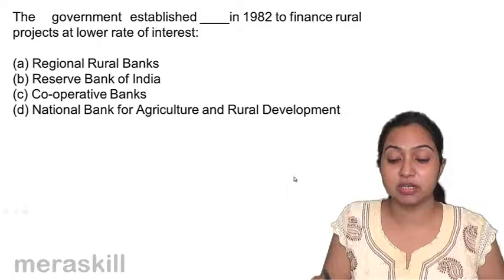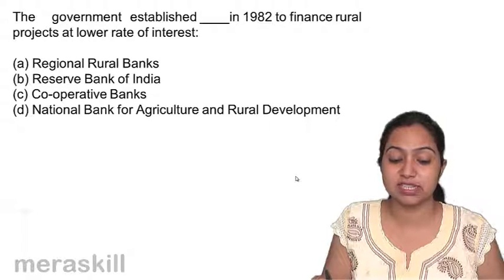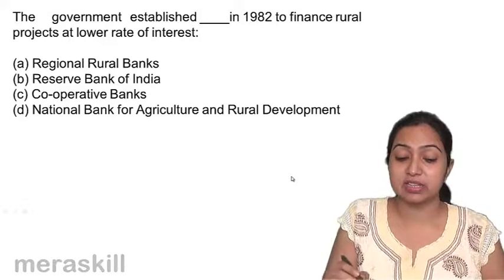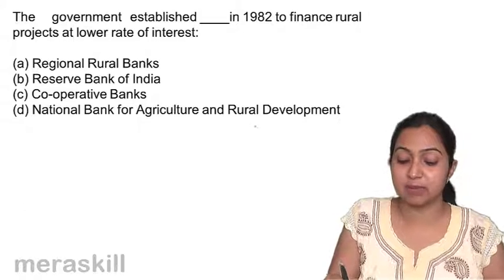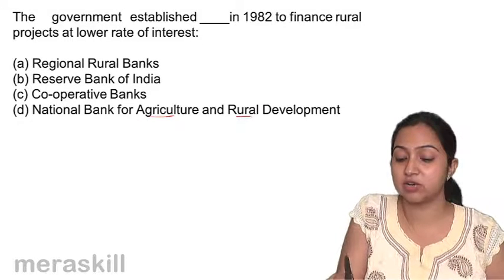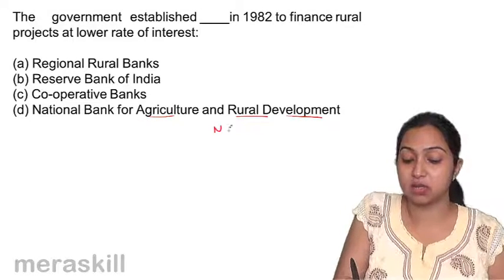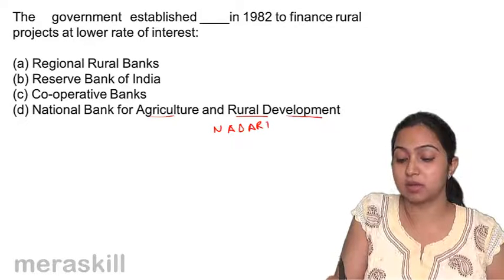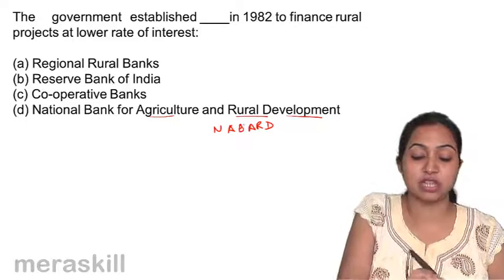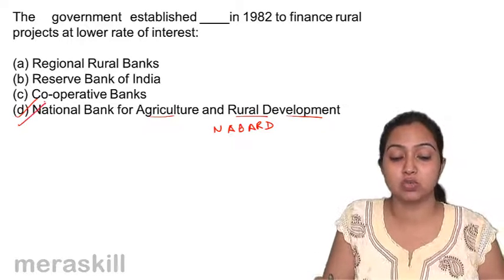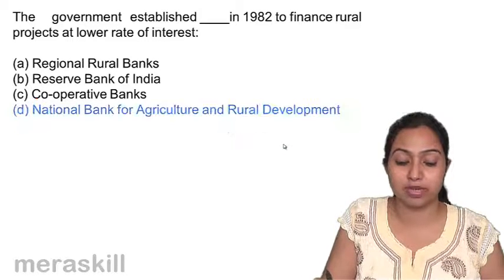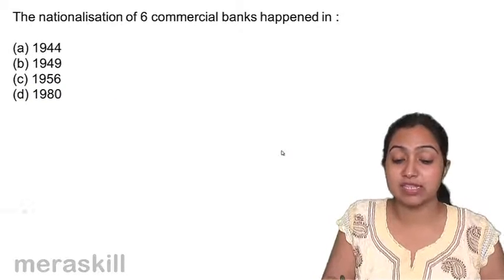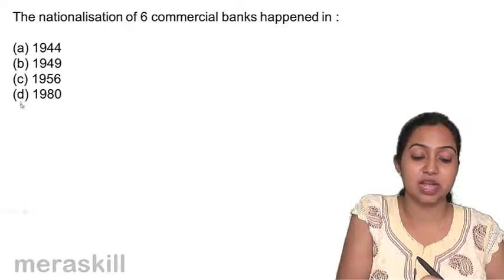The government established NABARD in 1982 to finance rural projects at a low rate of interest. The government established a bank for agriculture and rural development, called NABARD. NABARD was established in 1982 to finance rural projects at a lower rate. The nationalization of 6 commercial banks happened in the year 1980.